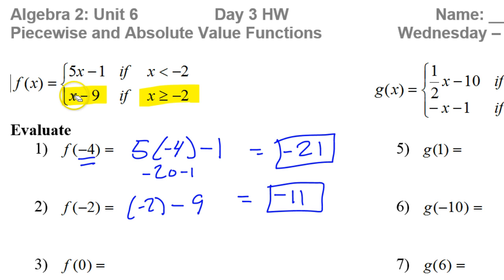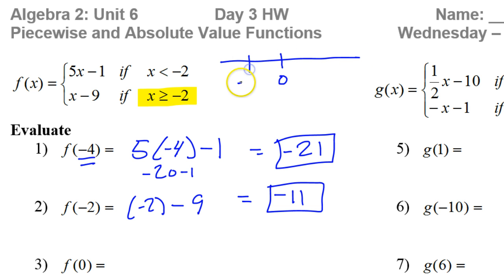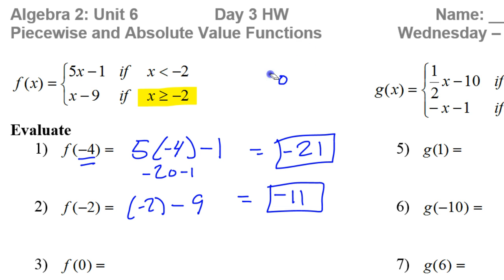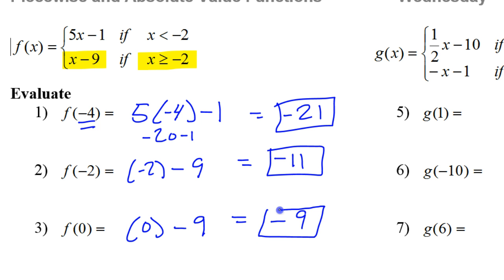What about 0? Is 0 less than negative 2? Is 0 greater than or equal to negative 2? If you're having trouble, just picture a number line. Here would be 0, and negative 2 would be over here. See how 0 is to the right of negative 2 — that tells you 0 is greater than negative 2. So we use the bottom part of the piecewise function: x minus 9, which gives 0 minus 9, and that's negative 9. That's the answer to number 3.